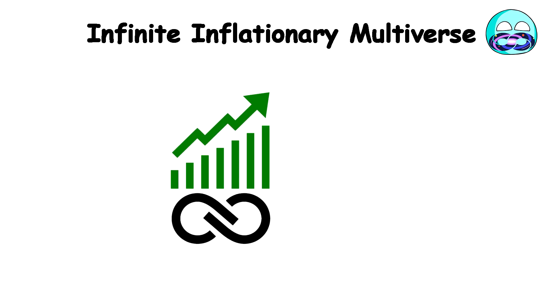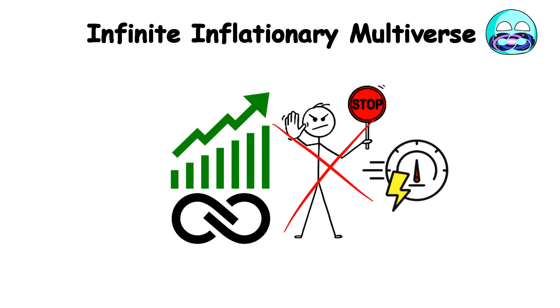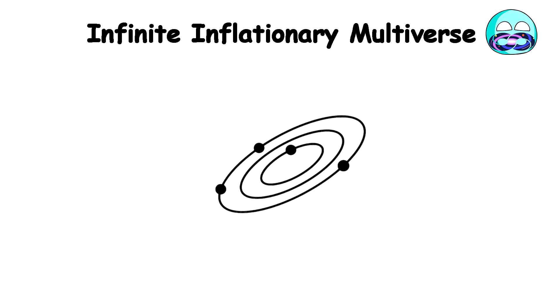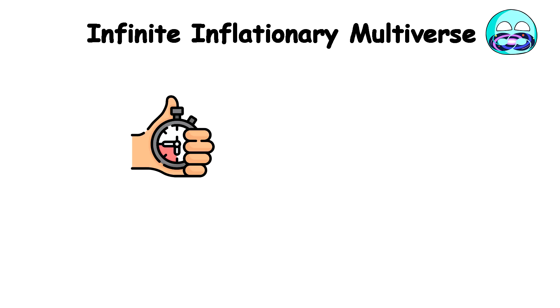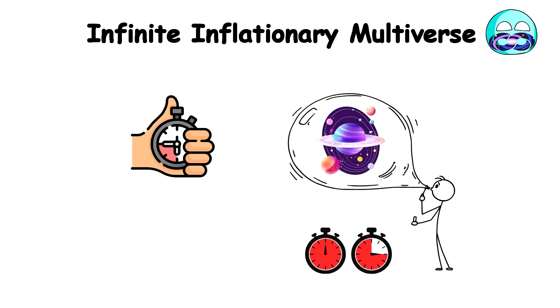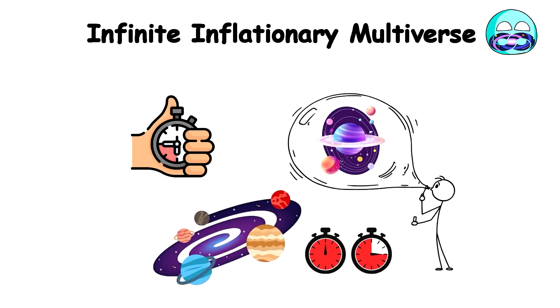But, eternal inflation says that inflation never completely stopped, it just kept going at full speed in other regions of space. Different parts of space stop inflating at different times, so when inflation stops, a new bubble universe like our own is formed.